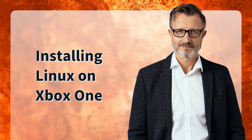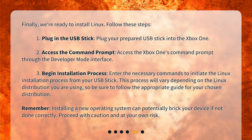Installing Linux on Xbox One. Finally, we're ready to install Linux. Follow these steps. 1. Plug your prepared USB stick into the Xbox One. 2. Access the command prompt through the Developer Mode interface. 3. Begin the installation process — enter the necessary commands to initiate the Linux installation from your USB stick. This process will vary depending on the Linux distribution you are using, so follow the appropriate guide for your chosen distribution. Remember, installing a new operating system can potentially brick your device if not done correctly — proceed with caution and at your own risk.